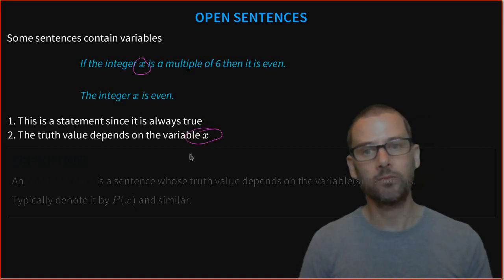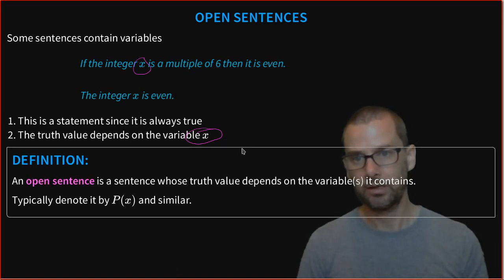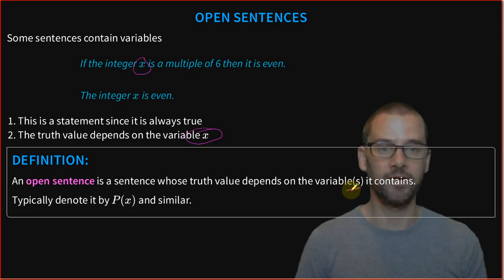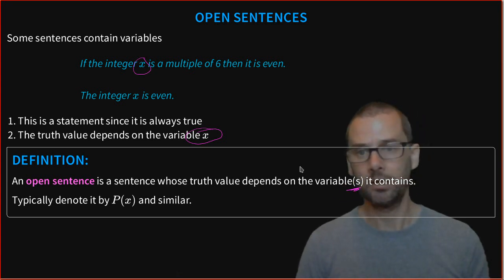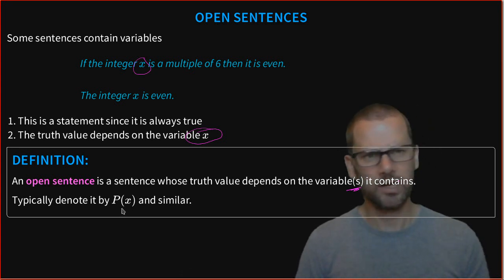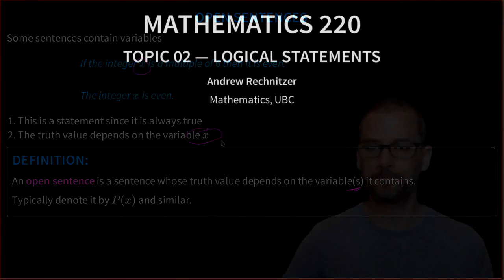The truth value depends on this variable x. And because of that, we call it an open sentence. An open sentence is a sentence whose truth value depends on the variable, or variables, that it contains. We typically denote it by P of x or something similar. This is quite similar to the notation we use for a function because the truth value is a function of that variable. That's an open sentence, and that's where we'll leave it for the moment.